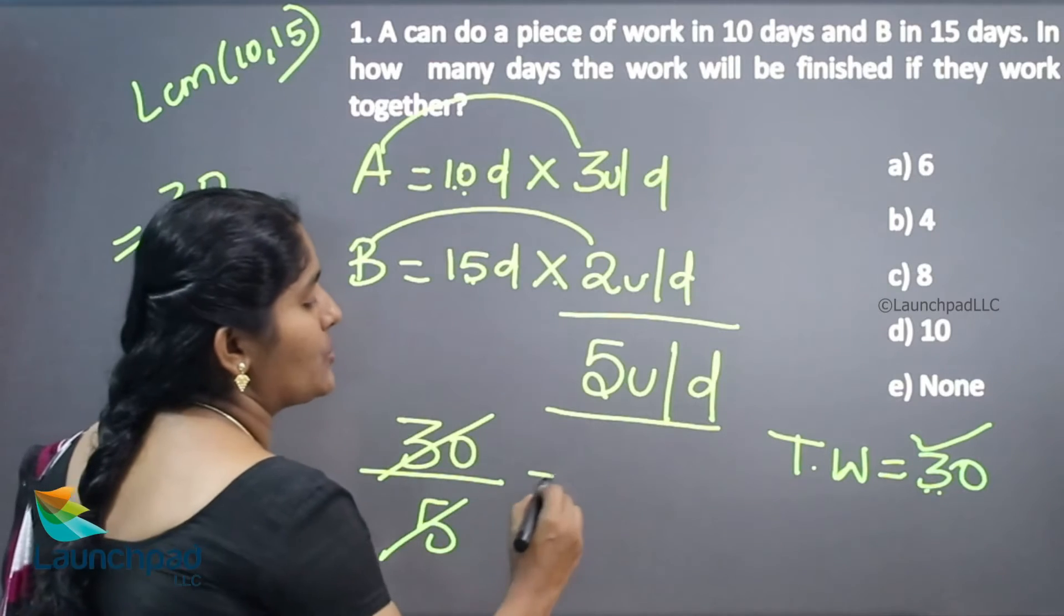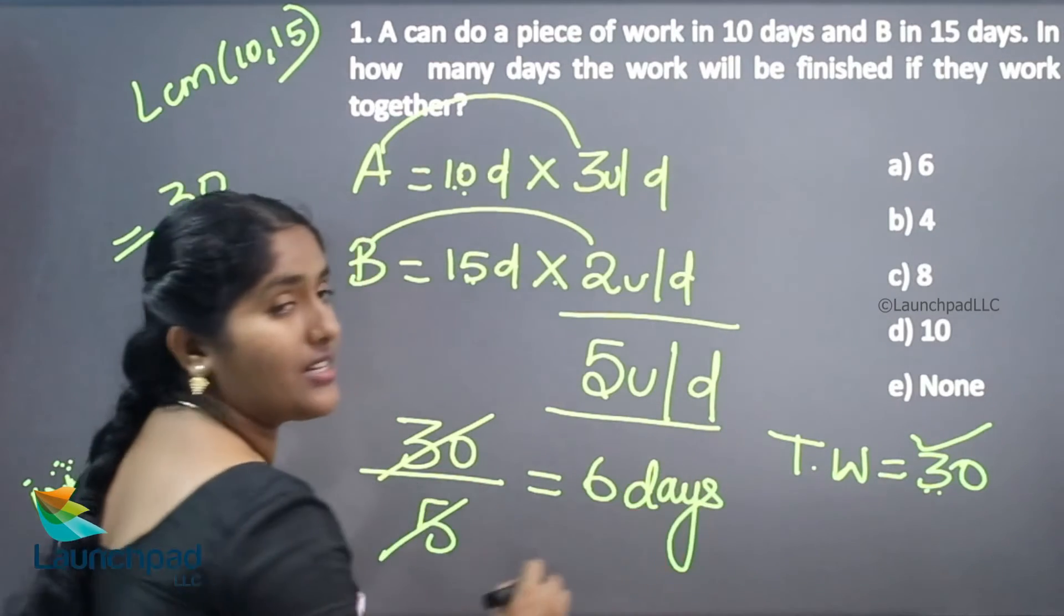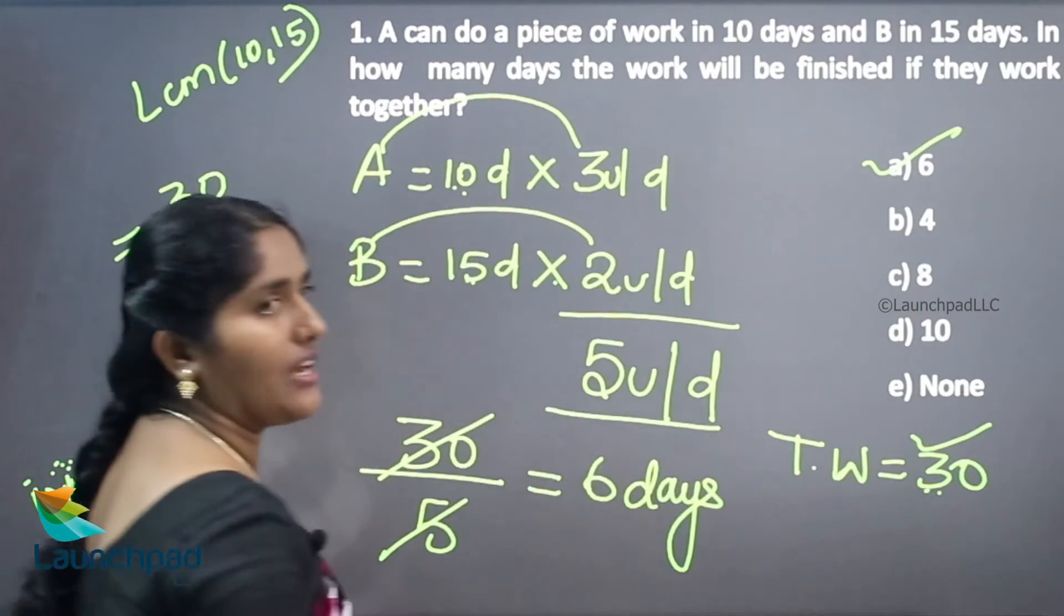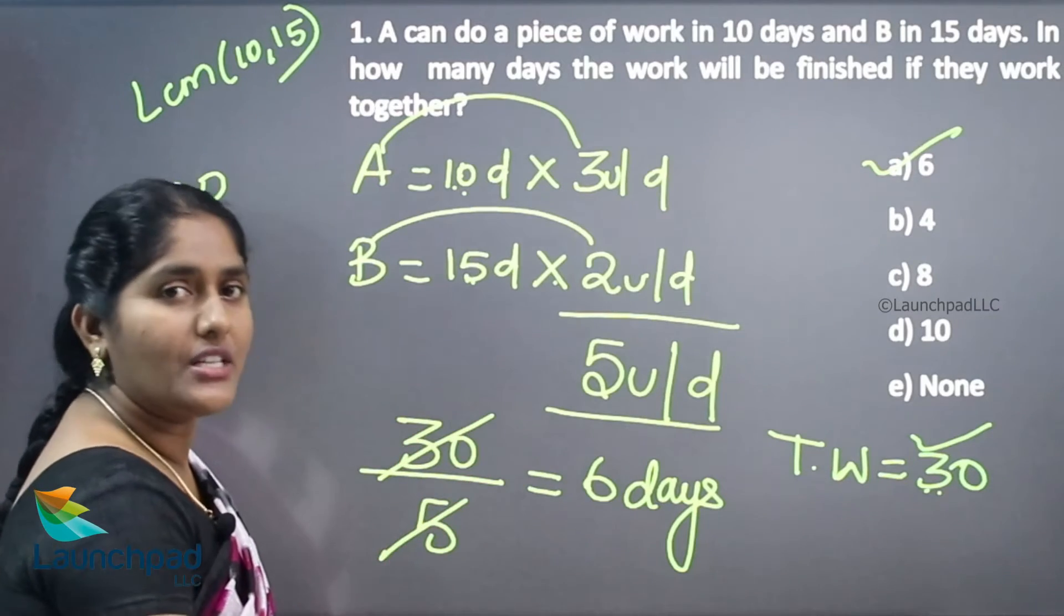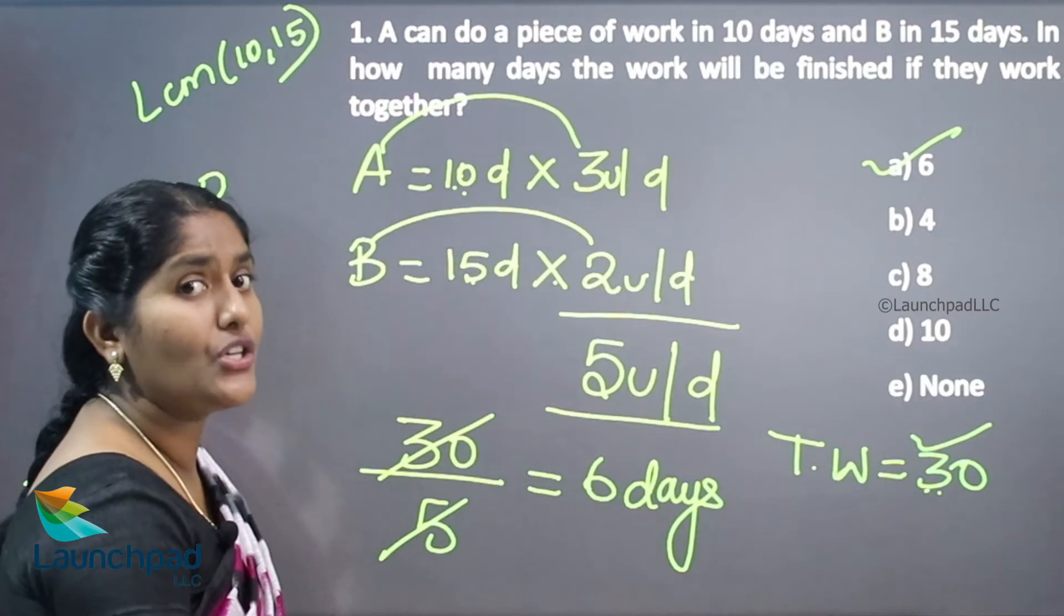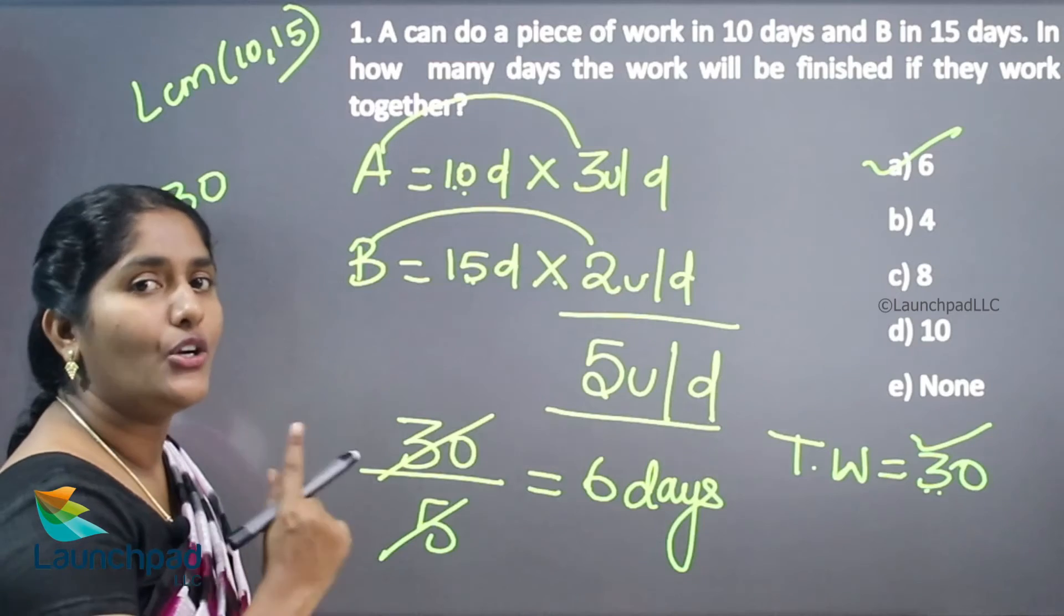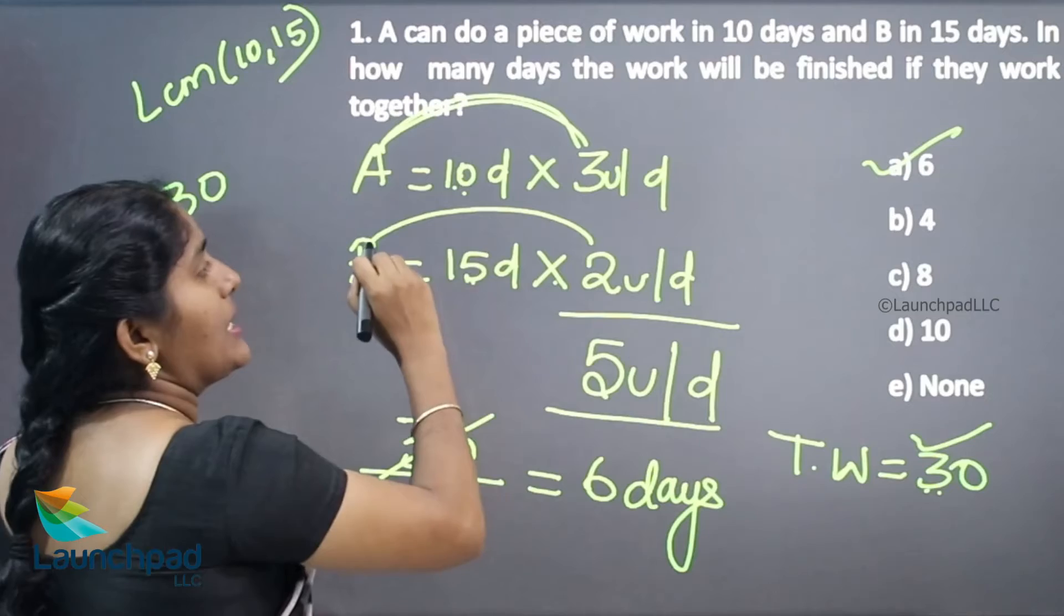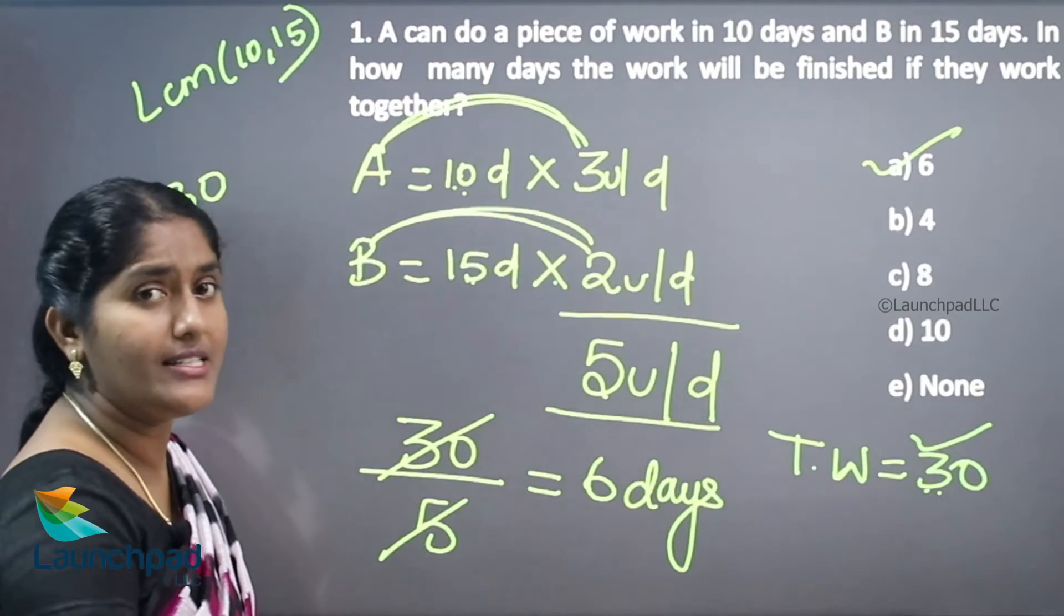30 divided by 5, your answer is 6 days. If both can join and work together, they are taking 6 days for the completion of the work. This is the shortcut for this question. Whenever you see this type of question, just take the LCM. This LCM is known as your total work unit. According to A's 1-day work unit and B's 1-day work unit, we can solve the question easily.